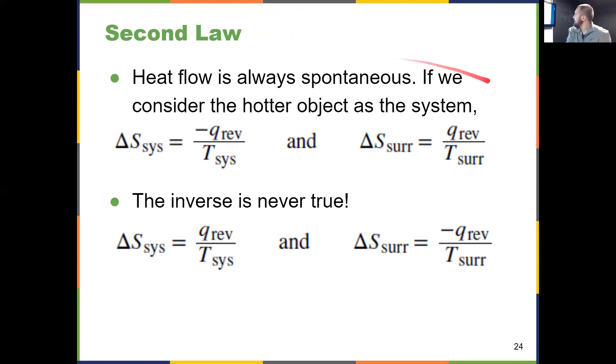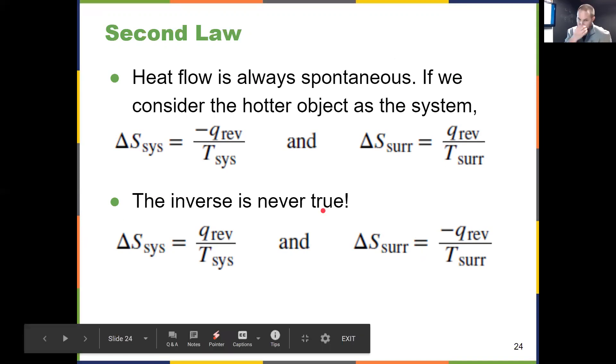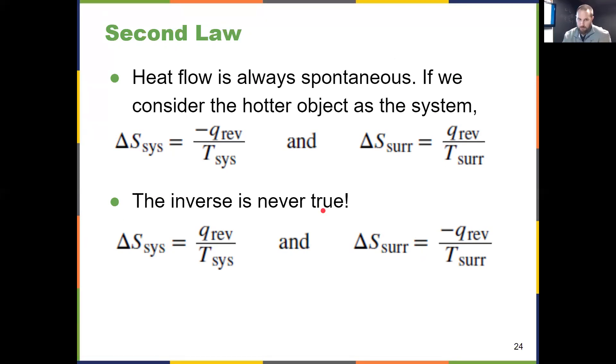That heat is going to the surroundings, giving positive q_rev over T_surr. If the temperature of the system is greater than the temperature of the surroundings, our entropy increases. That's how these things spontaneously happen. The inverse is never true - we never have a hotter object spontaneously gain more thermal energy.